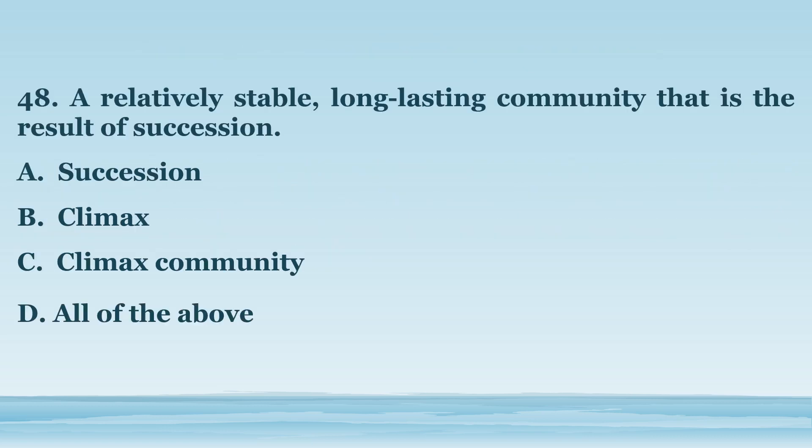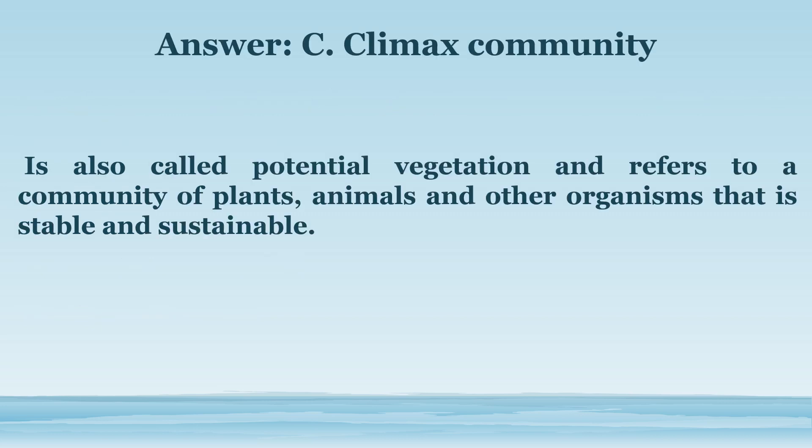Number 48. A relatively stable, long-lasting community that is the result of succession. A. Succession. B. Climax. C. Climax community. D. All of the above. The answer is letter C. Climax community. Is also called potential vegetation and refers to a community of plants, animals, and other organisms that is stable and sustainable.